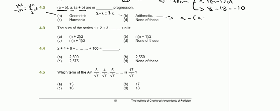Checking these three terms for arithmetic progression: the second term minus the first term is a minus (a minus b), which equals b. The third term minus the second term is (a plus b) minus a, which also equals b. Since the common difference is equal and equivalent to b, the progression is arithmetic.